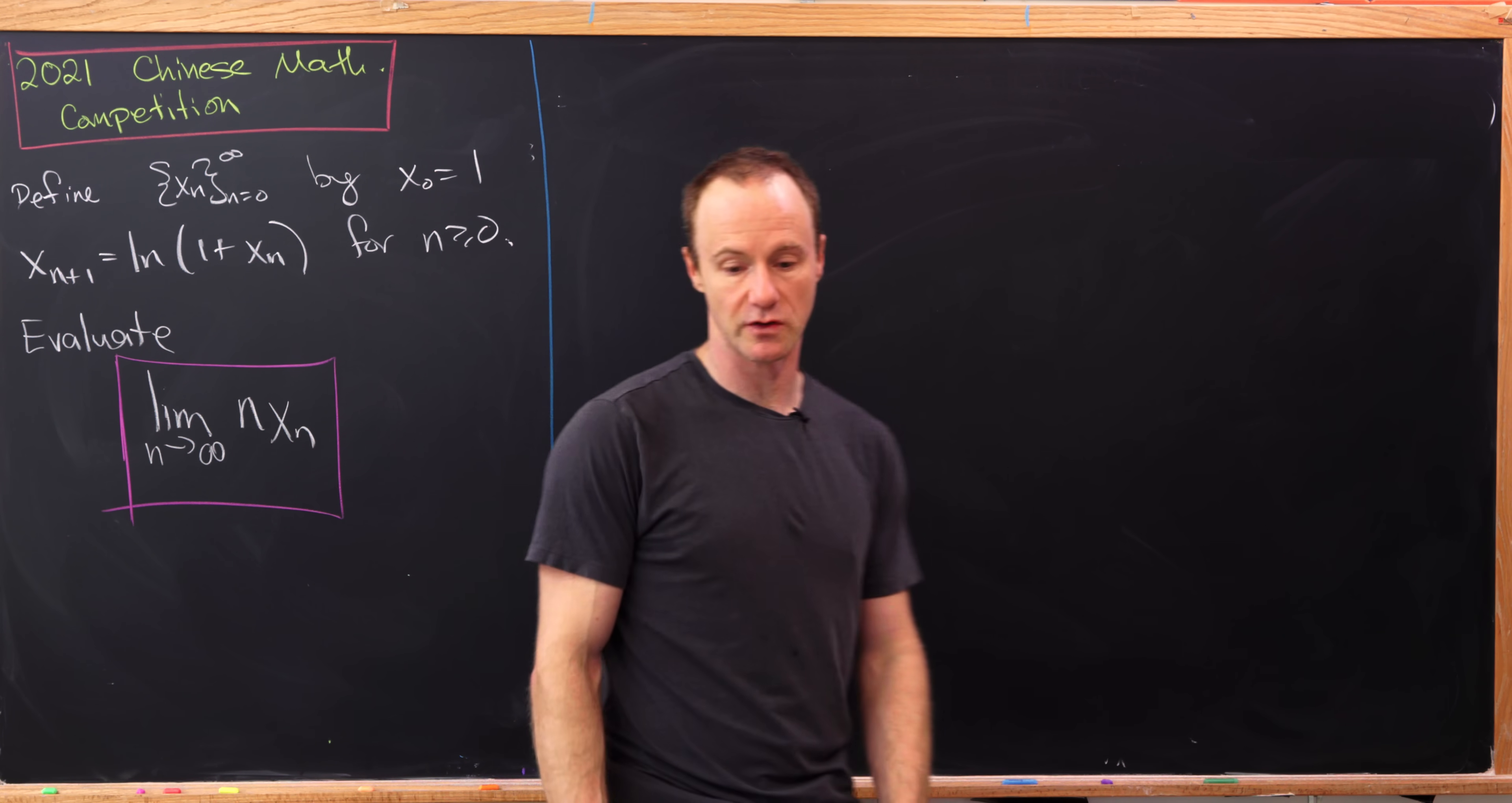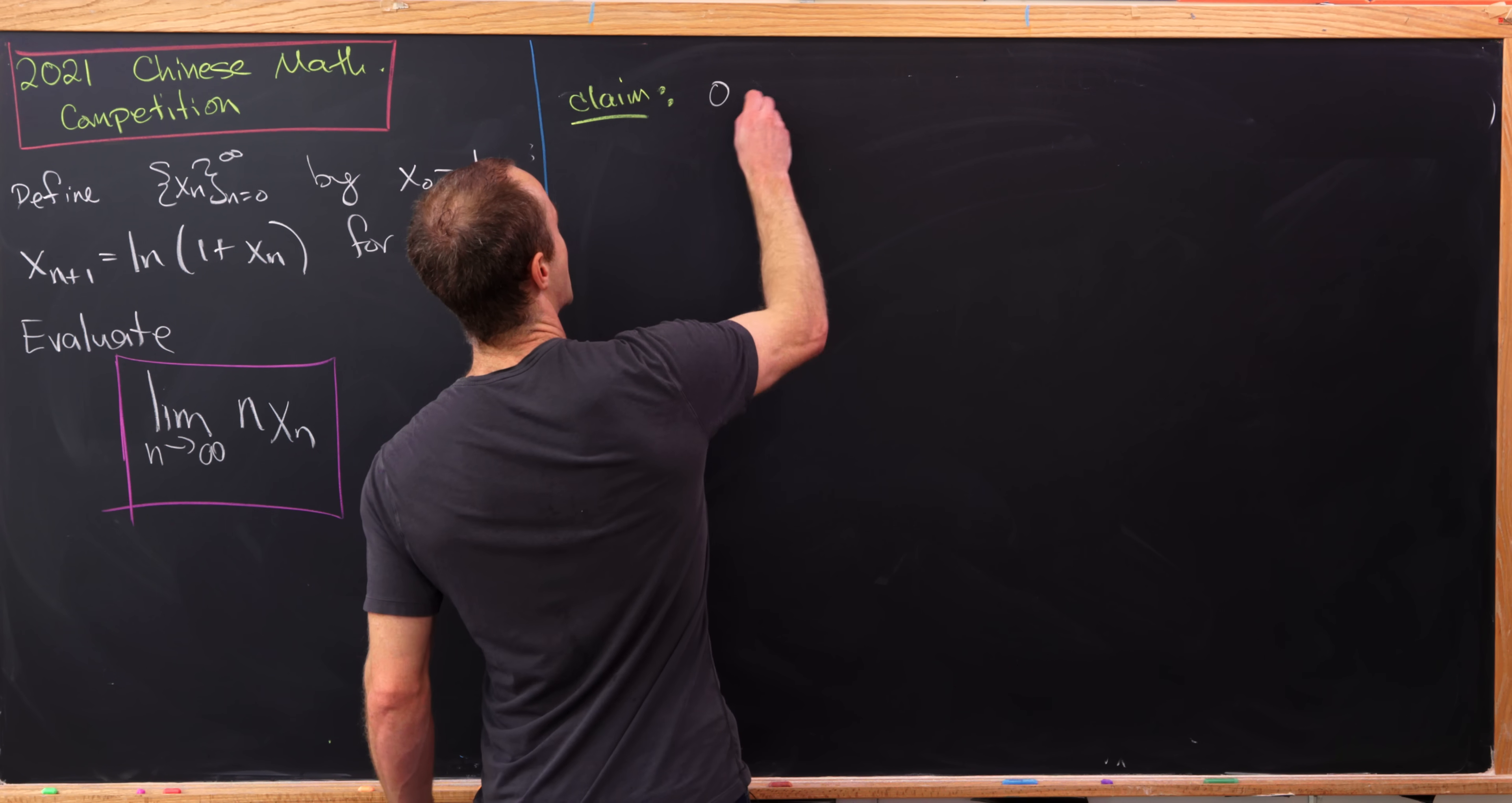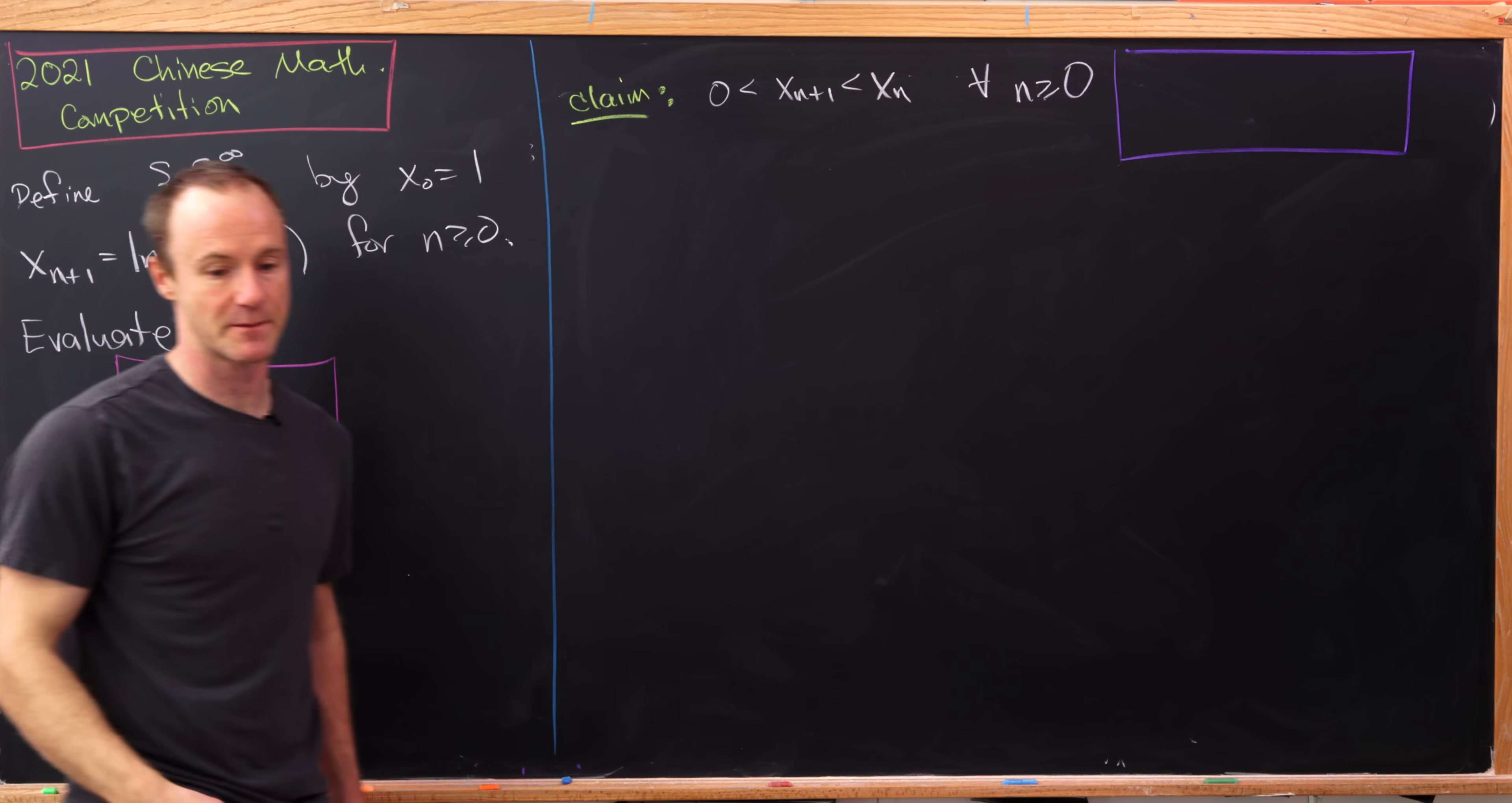So let's see if we can show that. We'll show that using the monotone convergence theorem. So let's make our following claim, which has to do with the boundedness and the decreasingness of our sequence. We're going to show that 0 is less than x_{n+1}, which is less than x_n, and this is going to be true for all n greater than or equal to 0.